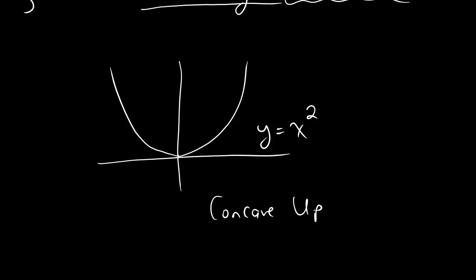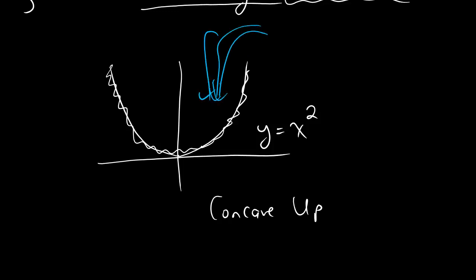We're going to be tossing around this idea of functions that are either concave up or concave down. The basic idea for a function that's concave up is that it's got a sort of scoopy shape to it. For example, this has the property that if you were to pour water in — you can tell it's water because it's blue — it would hold water.